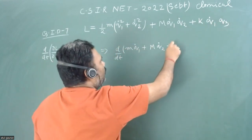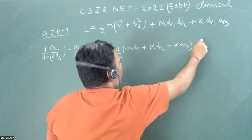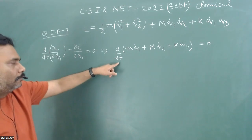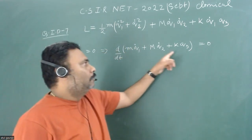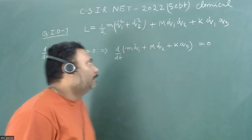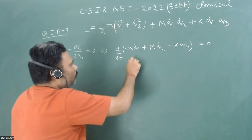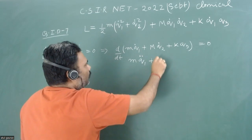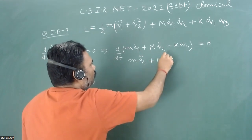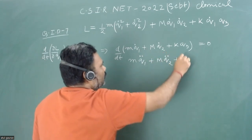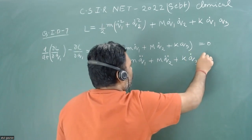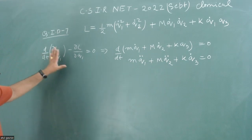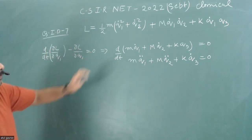That value must be zero. When we differentiate with respect to time — since Q1, Q2, and Q3 are all dynamical variables — we get: m·Q1-double-dot plus M·Q2-double-dot plus K·Q3-dot equals zero. This is the equation of motion from Q1.